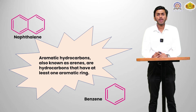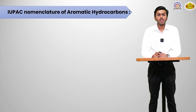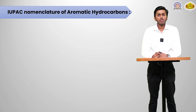Examples of aromatic hydrocarbons are benzene, naphthalene, thiophene, furan, etc. Now we will study about IUPAC nomenclature of aromatic hydrocarbons.